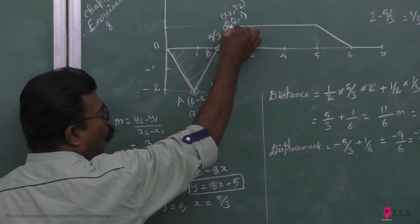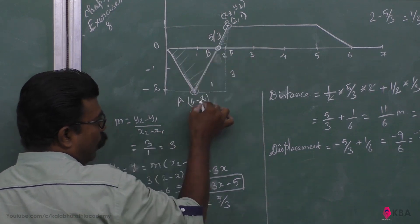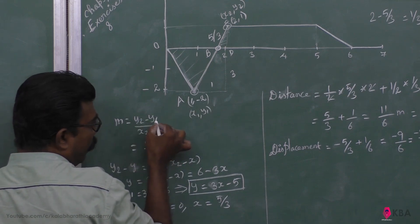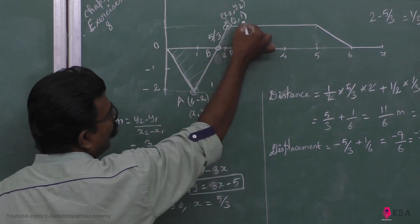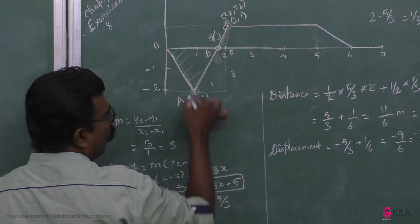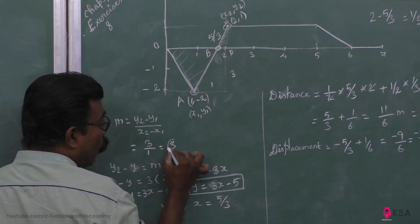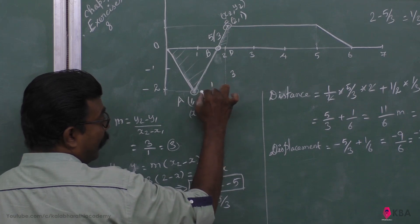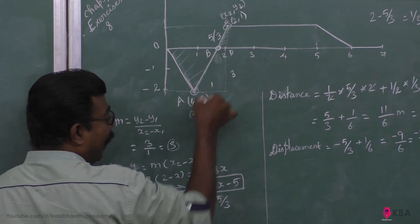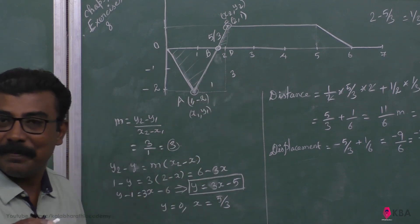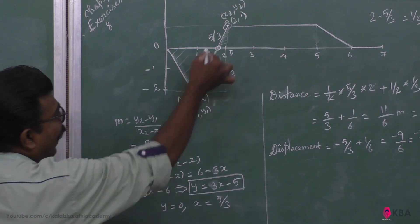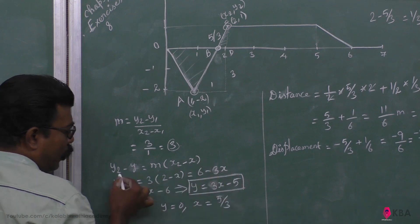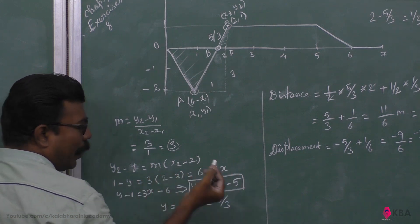So Y2 minus Y1: 1 minus minus 2, it is 1 minus minus 2, that is 3. X2 minus X1 — so X2 is 2, this is 1, 2 minus 1 is 1. So slope is 1. So it is suppose theta, tan theta — tan theta is 3. In the line equation — slope point — Y2 minus Y equals M into X2 minus X. 9th layer particular form.